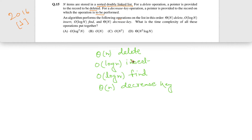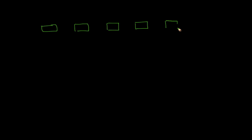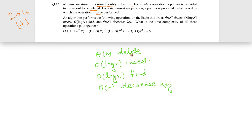We will try to find out, for a particular doubly linked list — let's say a sorted doubly linked list with nodes having key values 1, 2, 3, 4, 5 — the time complexity of each operation individually, and then multiply that by how many such operations are there.